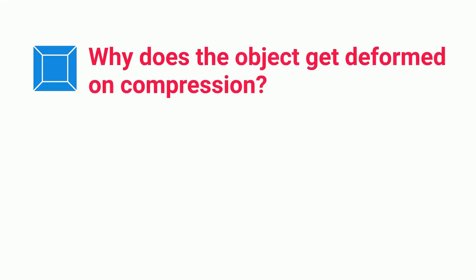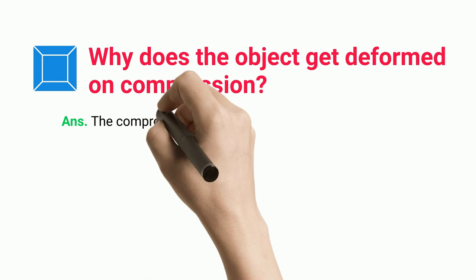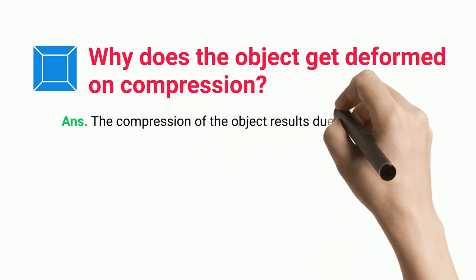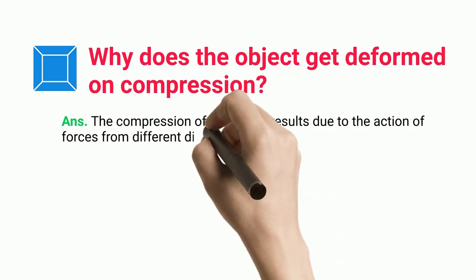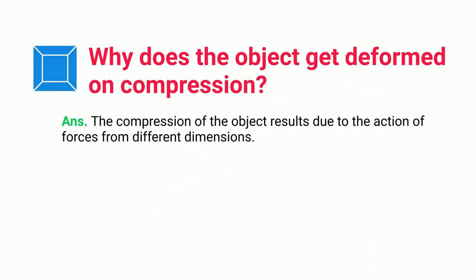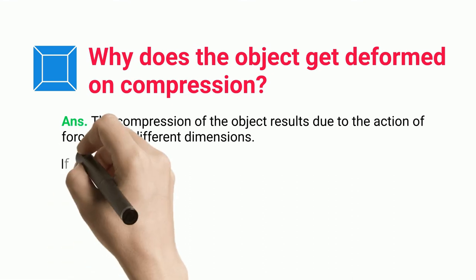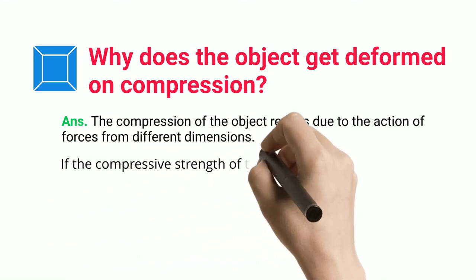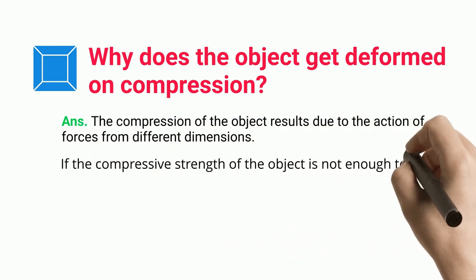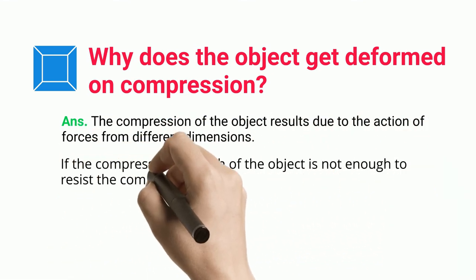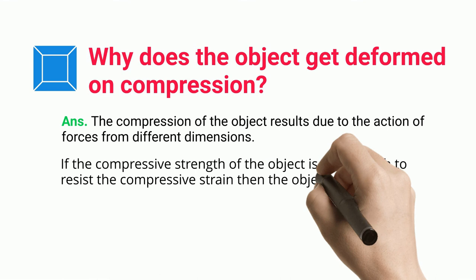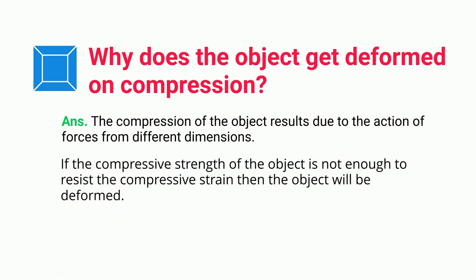Why does an object get deformed on compression? The compression of an object results from the action of forces from different dimensions. If the compressive strength of the object is not enough to resist the compressive strain, the object will be deformed.